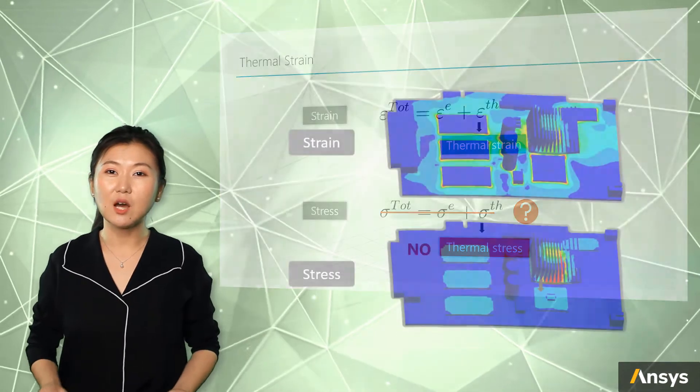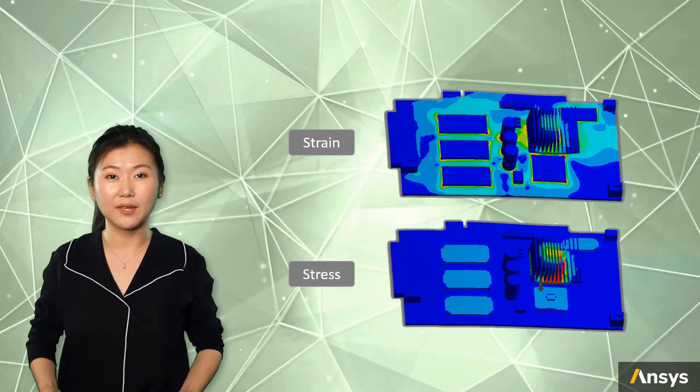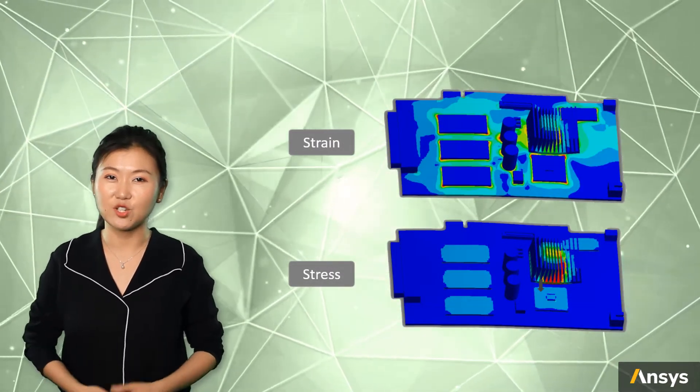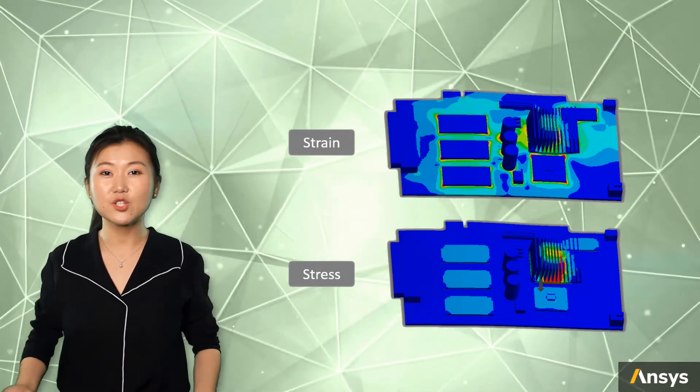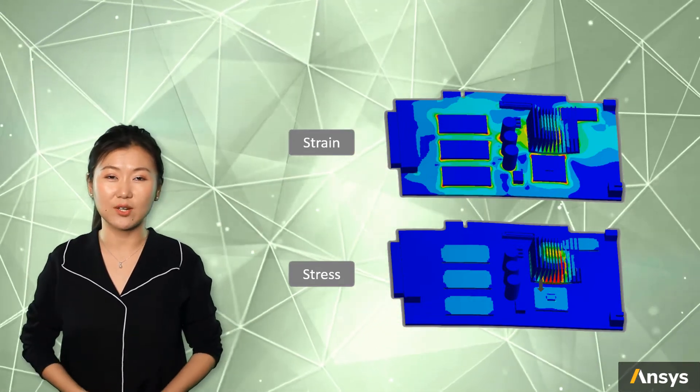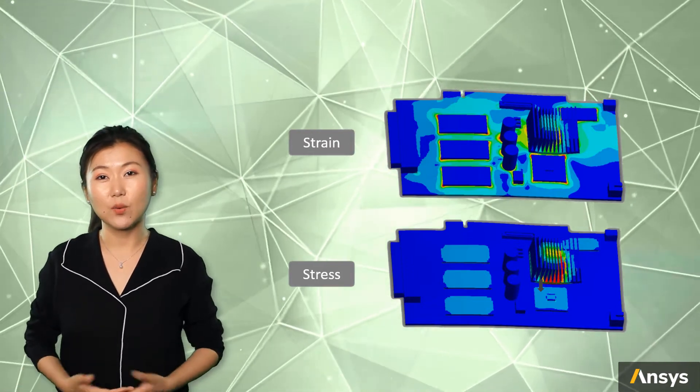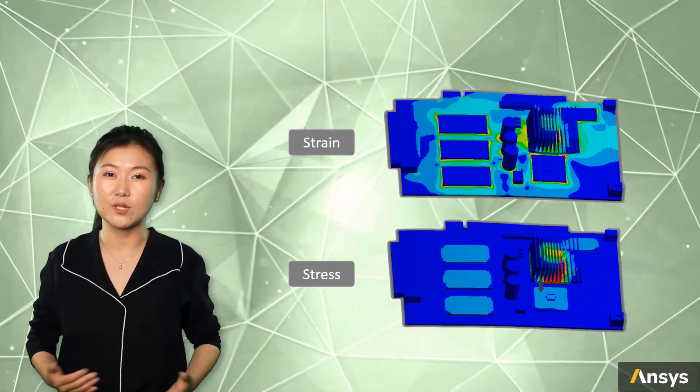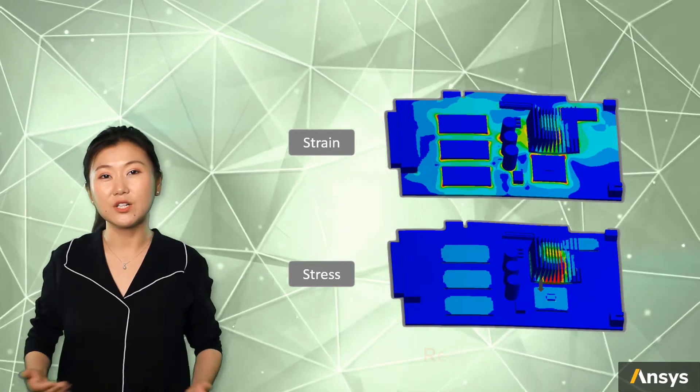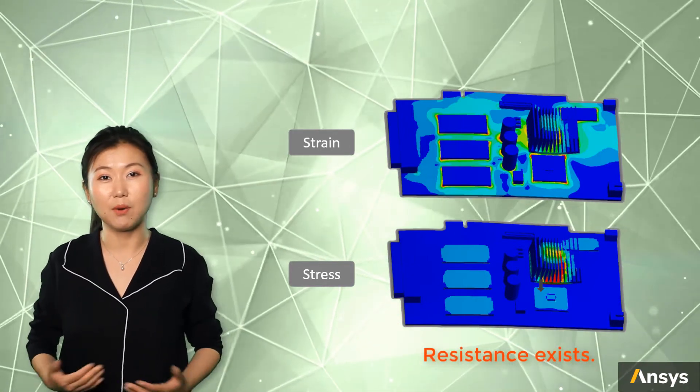However, it is common that you see stress developing in the material when the body is under thermal condition. Such stress appears with elastic strain. Stress and elastic strain is generated when the structure is under constraint with thermal condition, or there are different expand rates between different parts of the body.